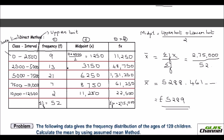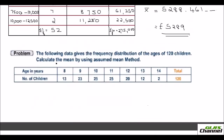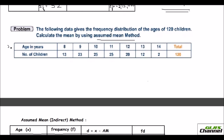The same problem can also be done with the assumed mean method — also called the deviation method or indirect method. For the second method I have taken another problem: the following data gives the frequency distribution of the ages of 120 children; calculate the mean using the assumed mean method. If the problem specifies a method, you must use that method. Here the x value and frequency f are directly given: at age 8 there are 13 children, age 9 has 23 children, age 10 has 25 children, and so on.